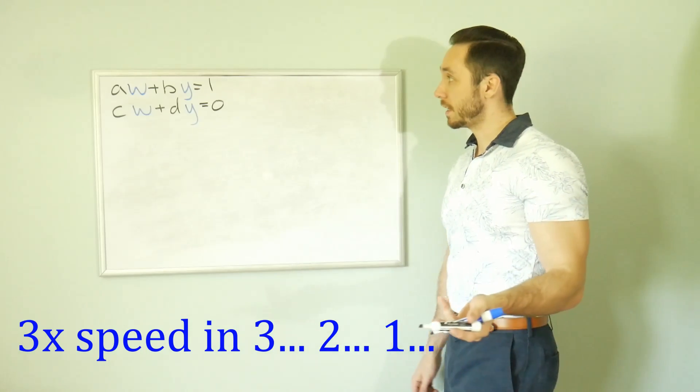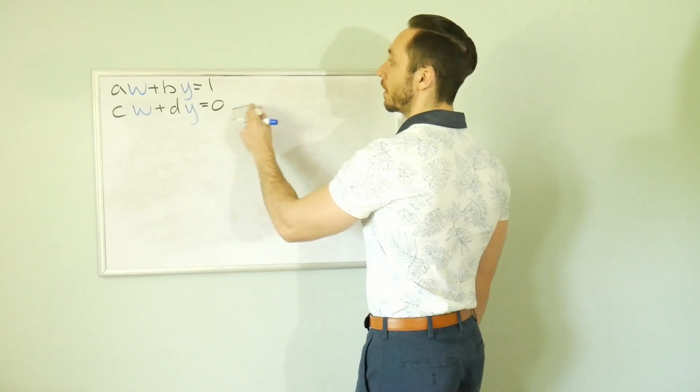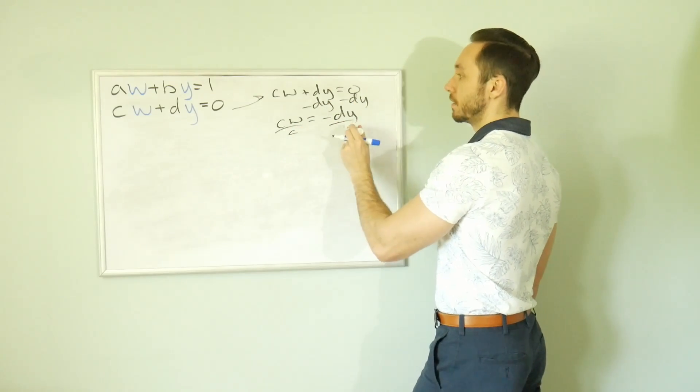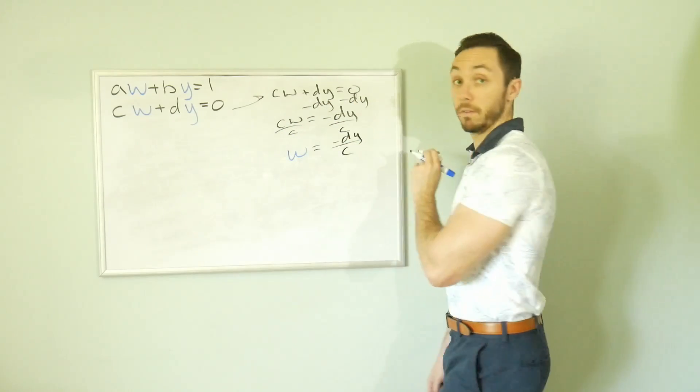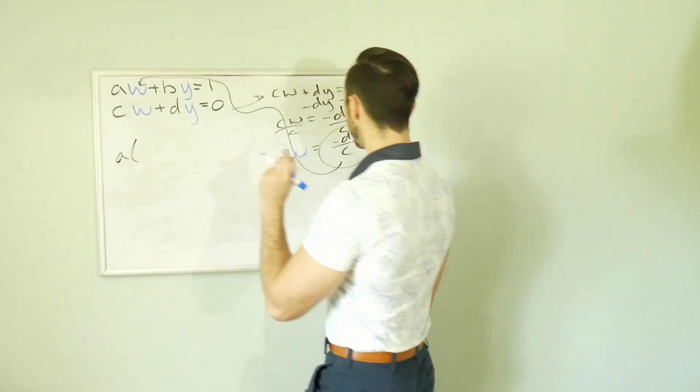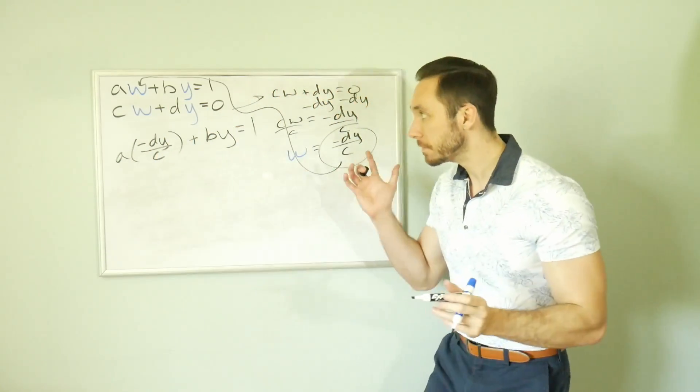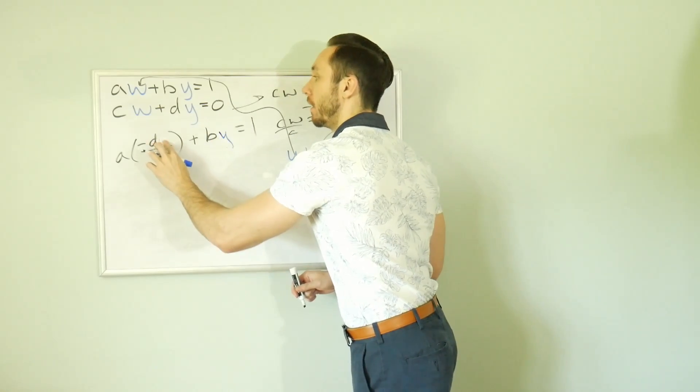Let's literally do the same thing. So I'm going to take the bottom, the zero one, and I'm going to isolate W here. So CW plus DY is equal to zero. Subtract that D times Y from both sides. CW is equal to negative DY. And divide out C from both sides. So we're going to get W is equal to negative D times Y over C. This is the same thing. So we've got A times.